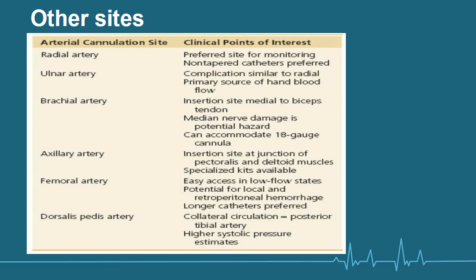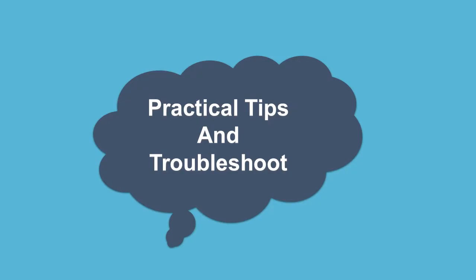Other sites for arterial cannulation include: the ulnar artery — similar complications to the radial artery but the primary source of hand blood supply, so be careful not to compromise the hand. The brachial artery should be avoided unless absolutely necessary because it is an end artery supplying the whole arm — thrombosis can cause loss of the arm. The axillary artery is also a frequent site. The femoral artery is an end artery but has a wide bore and higher blood flow, making thrombosis less likely than with the brachial artery, so it can be used. The dorsalis pedis artery is another option.